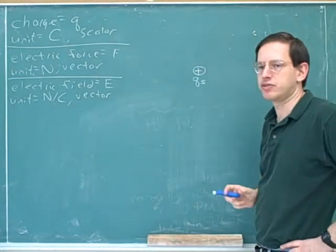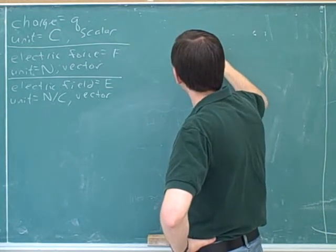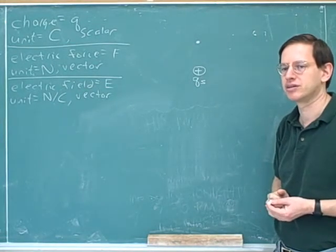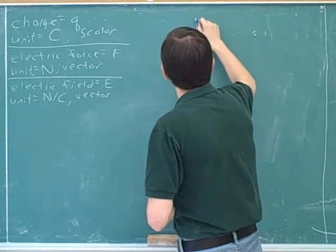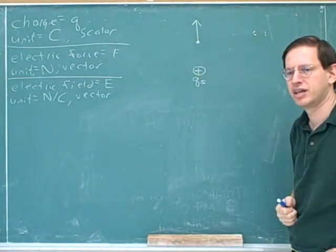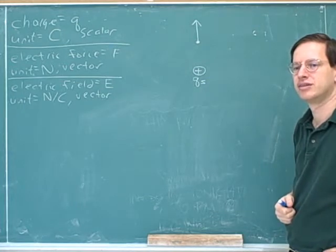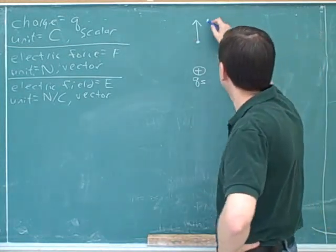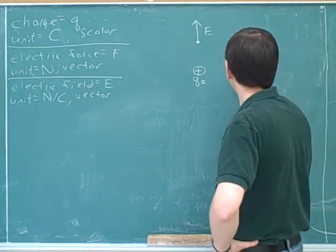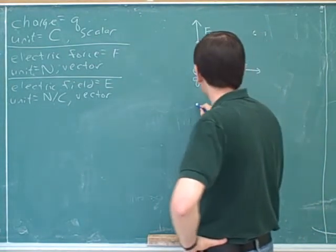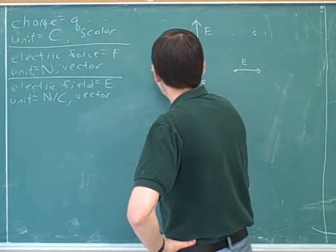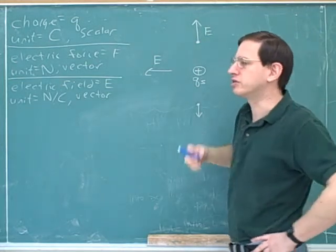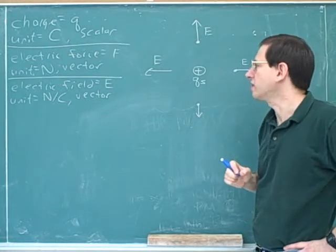Let's say we have a positive source charge. What would be the direction of the electric field at this point — up, down, left, right, northeast, or southwest? Up. How did you know that? Because the electric field points away from a positive source charge. Electric fields point away from a positive source charge. Now let's introduce a new concept: electric field lines. Electric field lines are a way to convey information about what the electric field is like around a source charge.